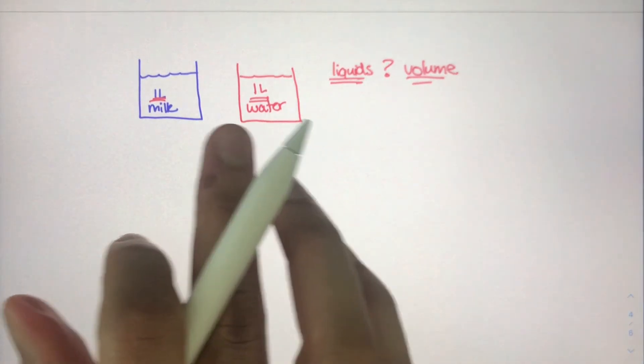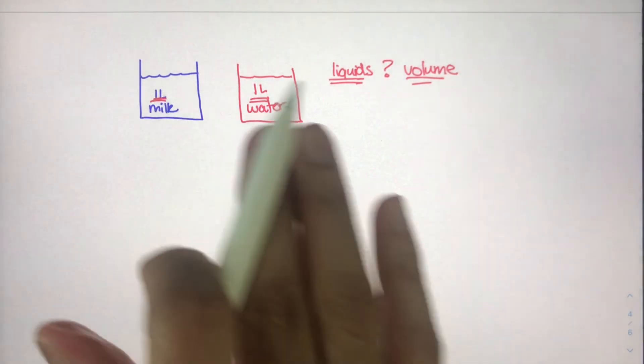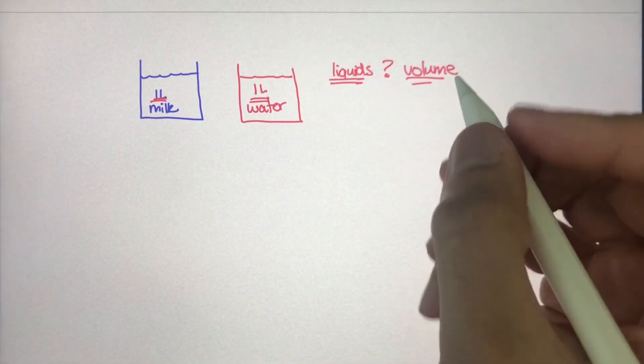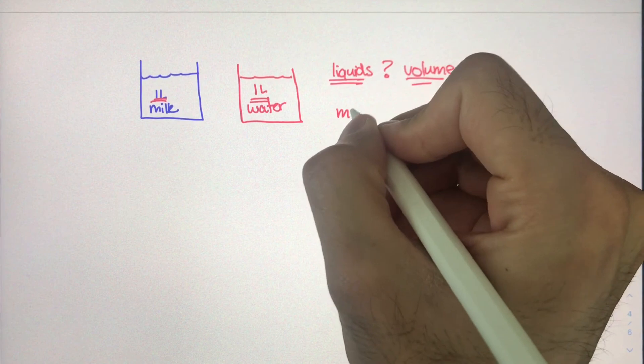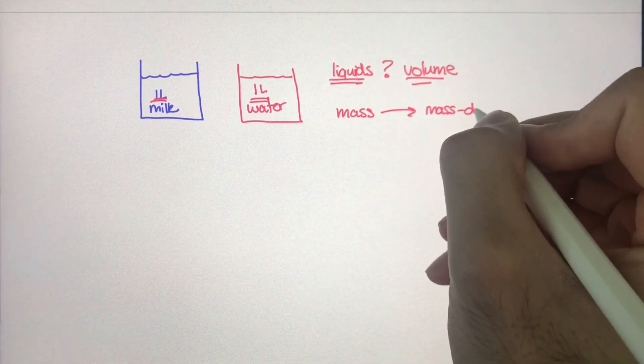So just because the volumes are the same in both of these containers for both of these substances, does that mean the two liquids are the same? Well no. So how do we actually get to classifying or characterizing these liquids? Well we do so using mass, and more specifically, mass density.